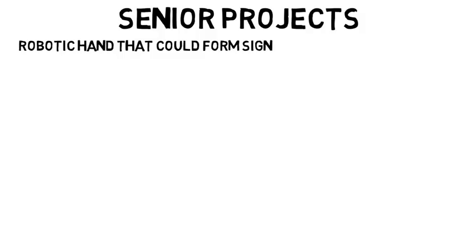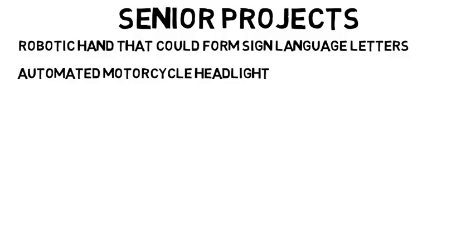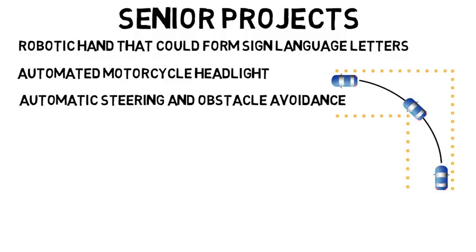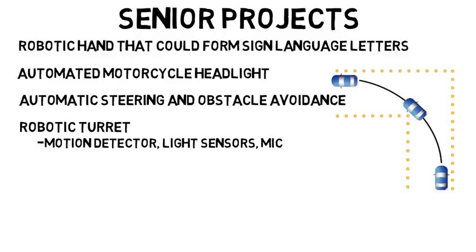Looking at some senior projects: one group made a robotic hand that could form sign language letters based on keyboard inputs to help communicate with those who are deaf and blind. There was one with an automated motorcycle headlight that would physically turn based on the turning of the motorcycle or where the driver is looking to maximize safety. There was one for an automatic steering and obstacle avoidance farming vehicle. And there was one where students made a robotic turret using a paintball gun to track objects using motion detectors, light sensors, microcontrollers, and more, collecting data to test for accuracy, response time, and distance.